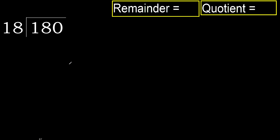180 divided by 18. 1 is less, therefore next. 18 is not less, therefore with 18.